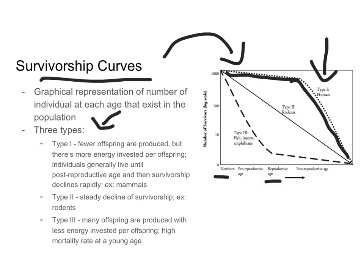On the other end of the spectrum, we have type three. Type three survivorship curves are shown by things like fish, insects, and amphibians. These organisms have a really high chance of dying young, but once they reach a certain age they're pretty likely to survive. This happens because these organisms tend to produce really large numbers of offspring, but the parents don't invest a lot of energy into taking care of those offspring, so many of them die. Fish lay thousands of eggs, but the parents don't really take care of those eggs, so many offspring die before reaching reproductive age.